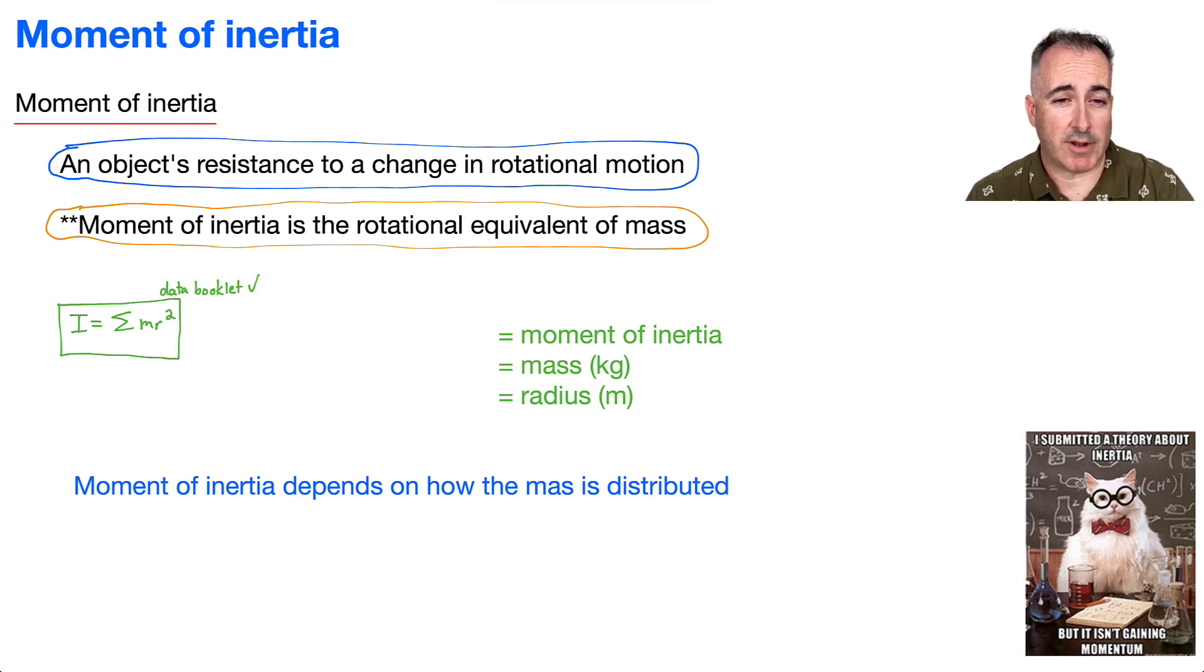So let's define our variables. First of all, we have this new variable called I, which is moment of inertia. We've got m, which is the mass in kilograms. We've got r, which is the radius in meters. So then what would the units be for moment of inertia?